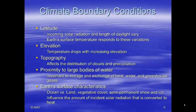First, looking at latitude — as you know, the incoming solar radiation and the length of the day varies as the latitude changes, and the Earth's surface temperature responds to these variations. For elevation, temperature drops with increasing elevation. Topography affects the distribution of clouds and precipitation. The proximity of large bodies of water is important in the storage and exchange of heat, water, and greenhouse gases. The temperature on land changes much faster than the temperature of the oceans and seas.